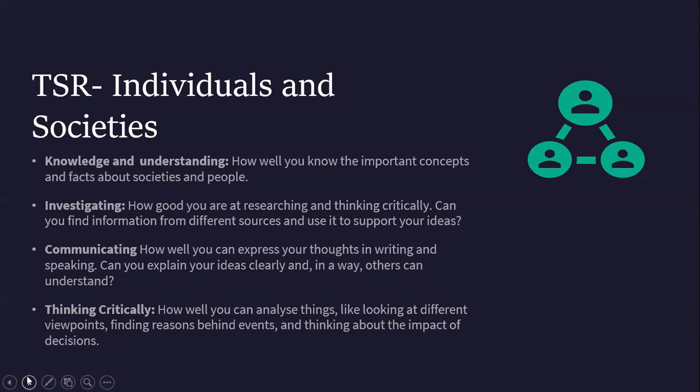Finally, Criterion D is thinking critically, and it will also be integrated with knowledge and understanding — so Criterion A and D will be assessed together this year. Criterion D covers how well you can analyze things like looking at different viewpoints, finding reasons behind events, and thinking about the impact of decisions. You may be given realistic situations or resources and asked to evaluate or analyze them based on OPVL — which is the origin, purpose, value, and limitation of the resource itself. In addition, the thinking critically stage will usually involve 'to what extent' questions that are debatable, where you can construct an essay directly aligned with your point of view, ensuring the message is coherent, cohesive, and clear for the reader.